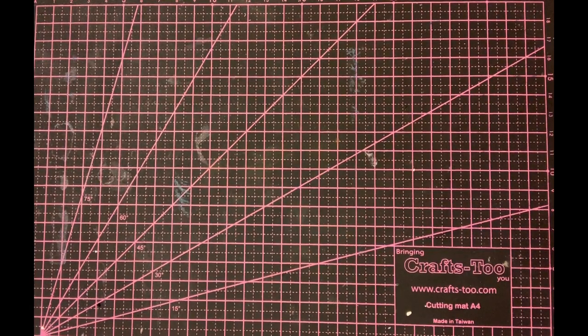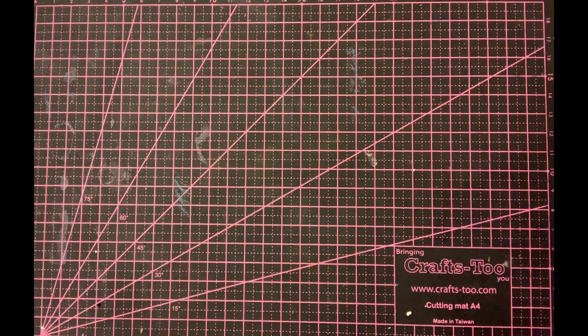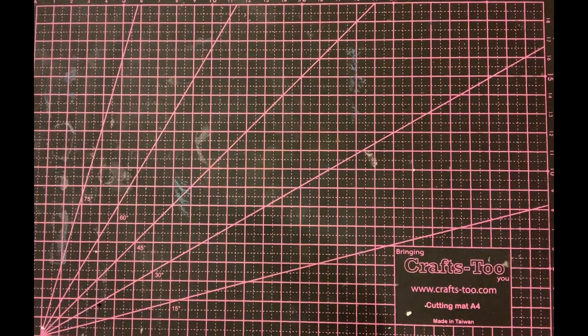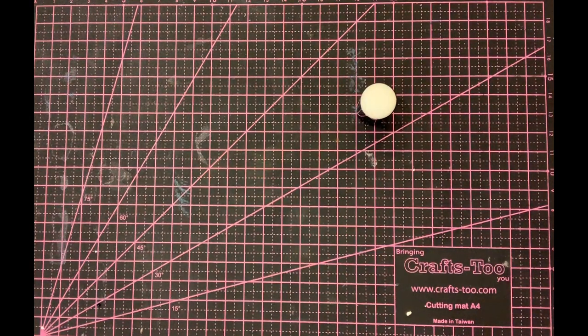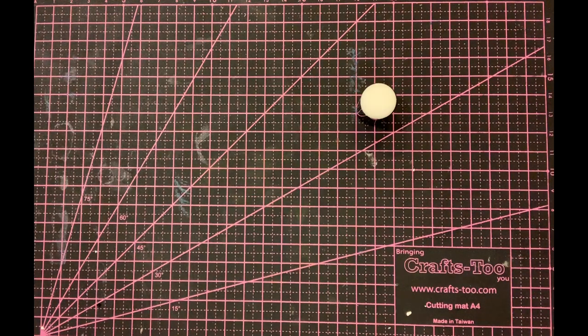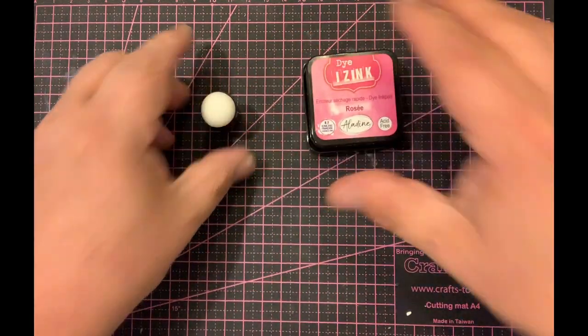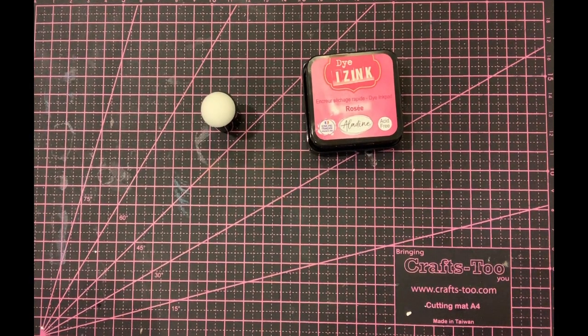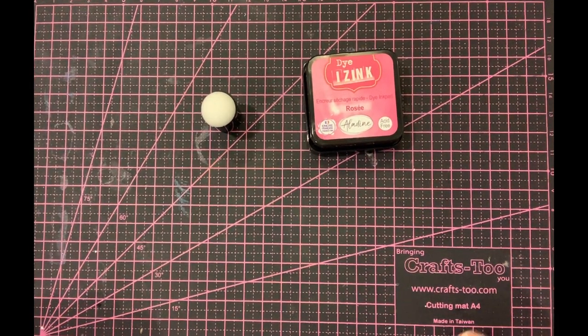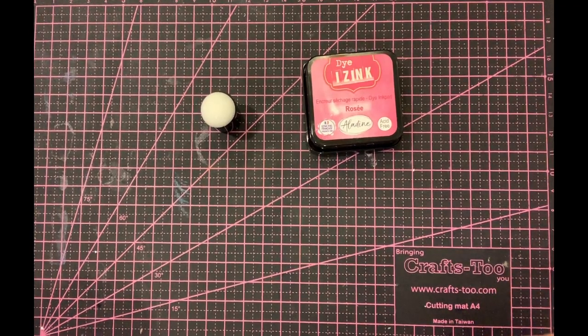I'm going to run that through, and while it's doing that, I'll take one of the crafty finger daubers. The ink that I'm using is Izink dye-based ink. Because I'm using flower making paper, the dye-based inks have a translucent quality which means the mica will shine through brighter than if I used pigment ink. Here I'm using rose.